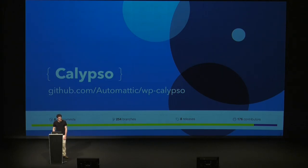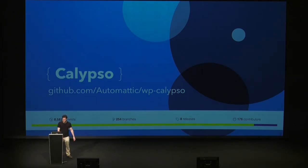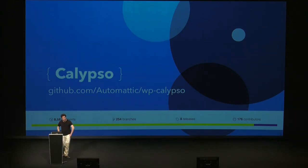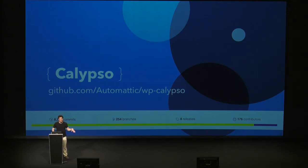This is Calypso in GitHub — you can take a look at it there. We actually queue a deploy to WordPress.com from this repository, so whenever there's a merge into the repository, we queue a deploy that eventually gets to production.